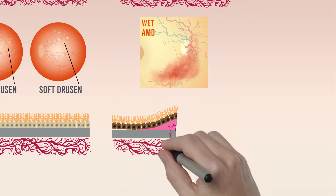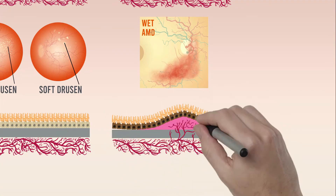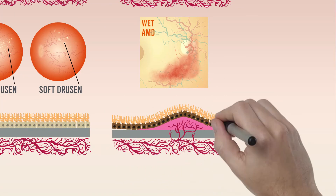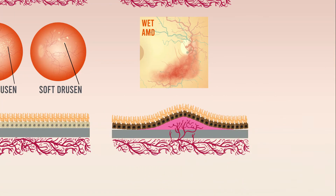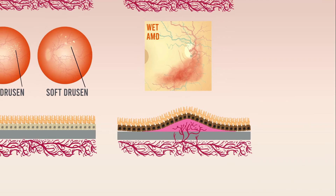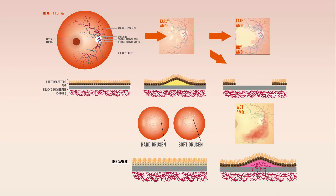Newly developed choroidal blood vessels penetrate areas where Bruch's membrane is not completely intact and infiltrate the RPE. This disrupts photoreceptor function and leads to vision loss.